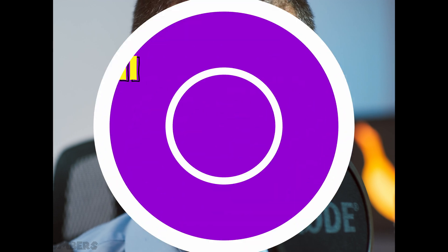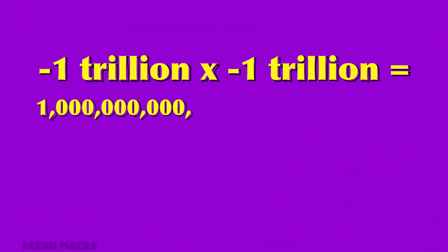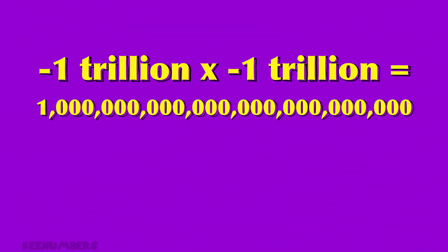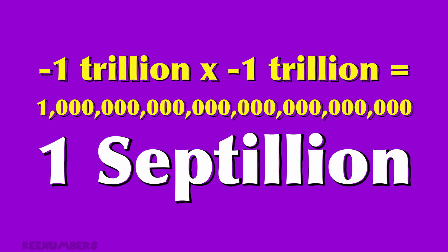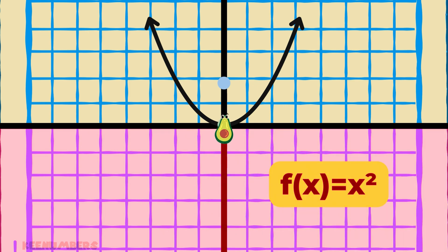Negative 1 trillion times negative 1 trillion is 10 to the 24th power, or my favorite: 1 septillion. Note this is an example of the function f(x) = x squared, whose graph illustrates that this function is always non-negative — but you'll learn more about that in high school math.